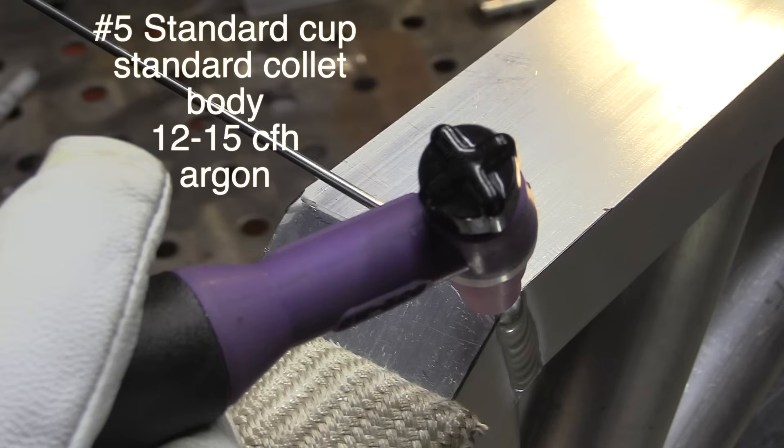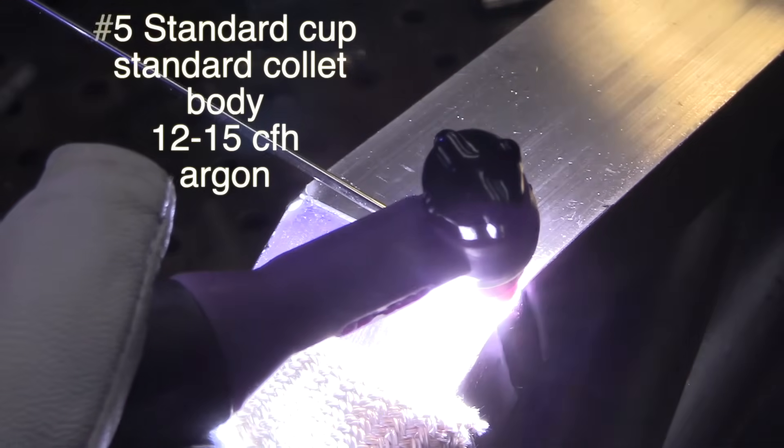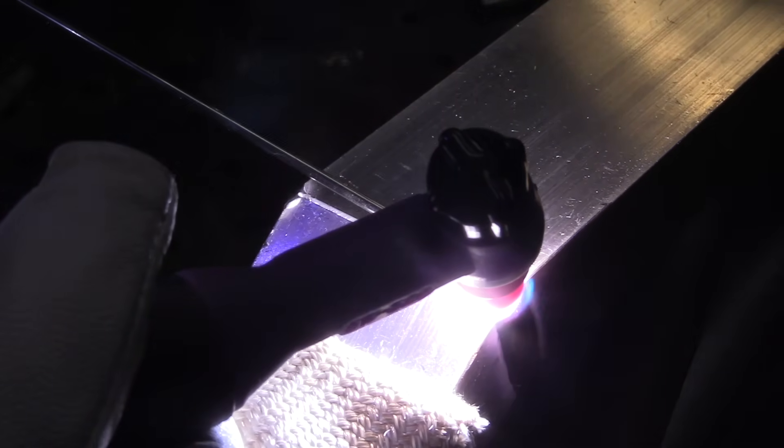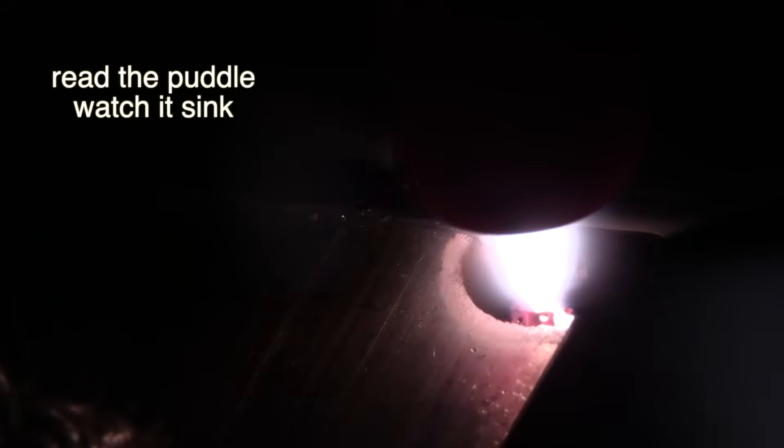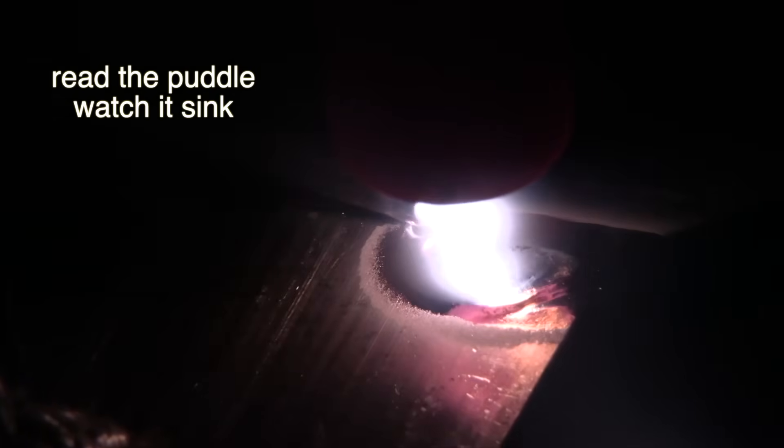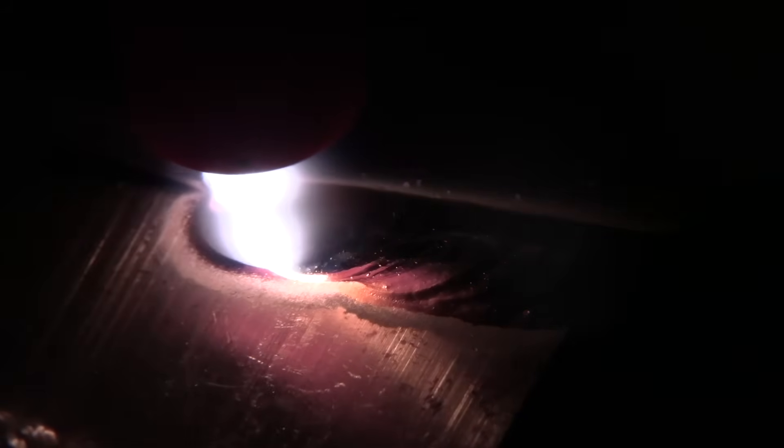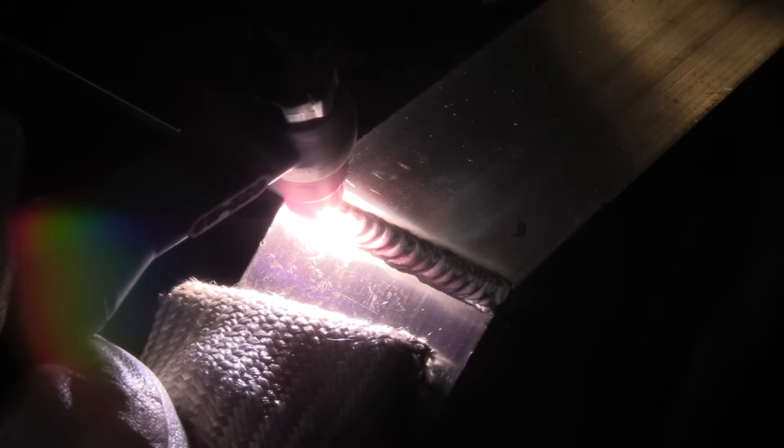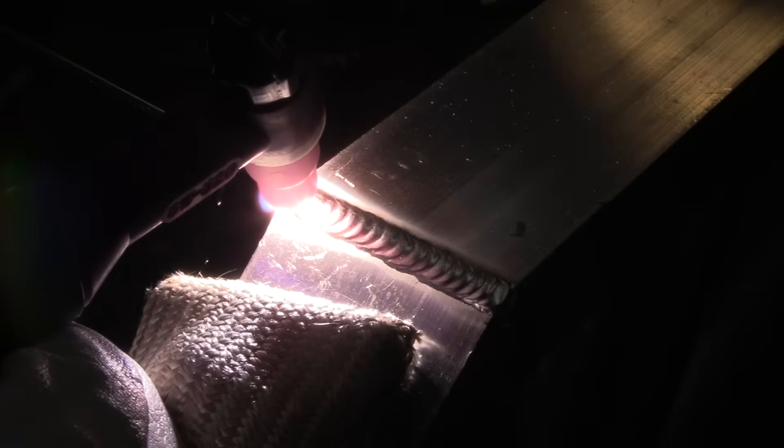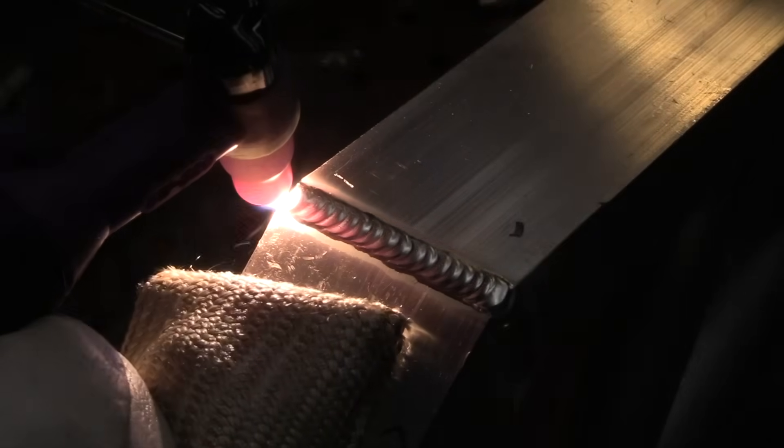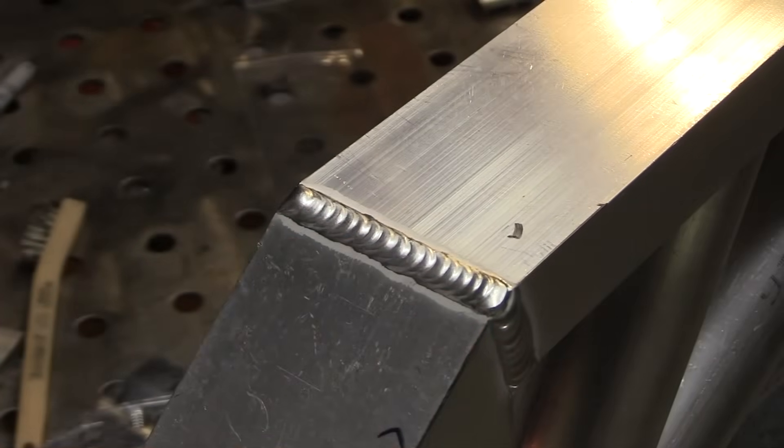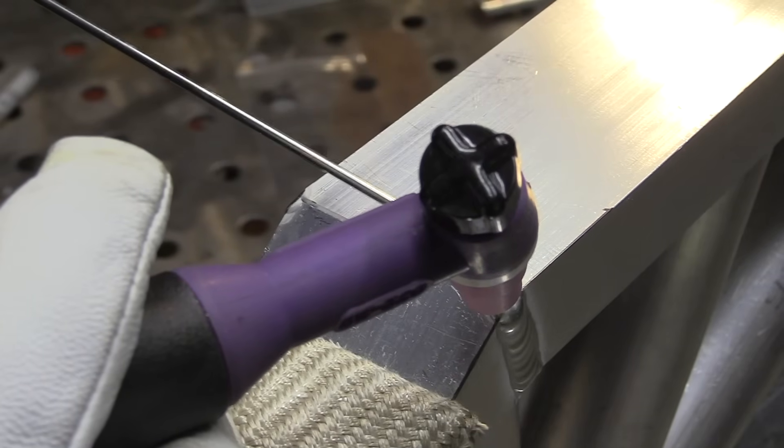Cup size matters and it can affect penetration. The reason is because it's the amount of argon flowing out the tip of that cup and the size of the shielded area. That shielded area is the only place that cleaning action will go. If you limit the shielded area by using a standard number five cup and about 12 to 15 CFH, some of that energy that would otherwise be dissipated out in that cleaning zone goes into the puddle and can help with penetration.